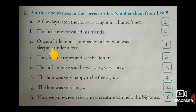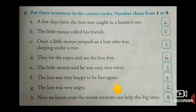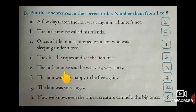First sentence: Once a little mouse jumped on a lion who was sleeping under a tree. Who was sleeping under a tree? The lion. Then the lion was very angry because the lion was sleeping. Then the little mouse said he was very, very sorry for that.